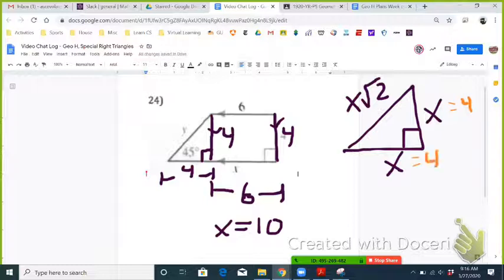so in this case X is 4, then the hypotenuse would be 4 root 2. So Y would be 4 root 2.